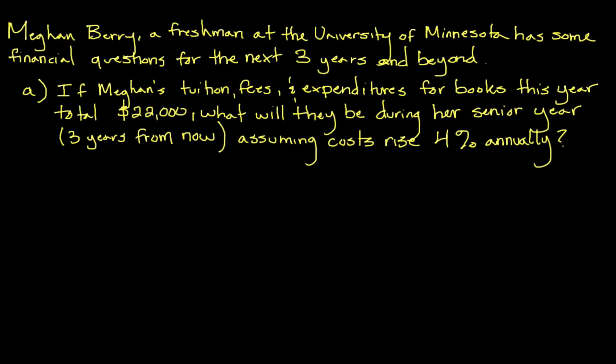We're going to start and work through a question, utilizing what we call the future value formula as a way to derive an answer. The question is: Megan Berry, a freshman at the University of Minnesota, has some financial questions for the next three years and beyond. First question: if Megan's tuition, fees, and expenditures for books this year total $22,000, what will they be during her senior year, which will be three years from now, assuming costs rise four percent annually?